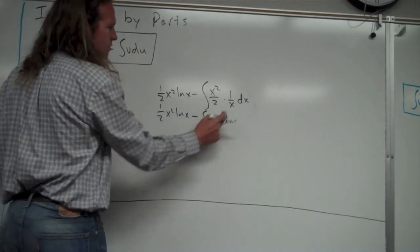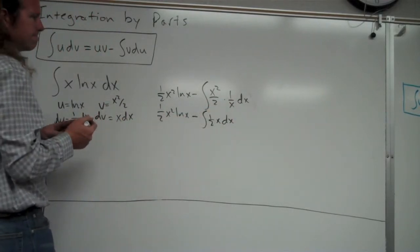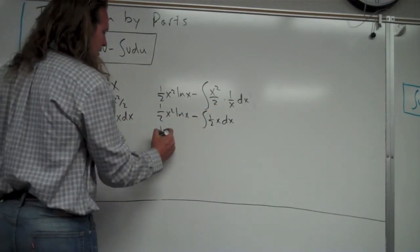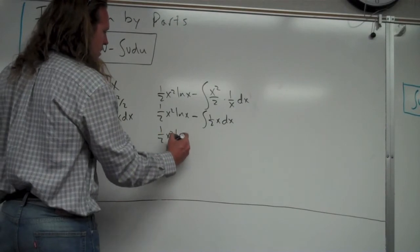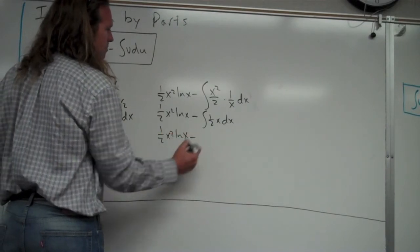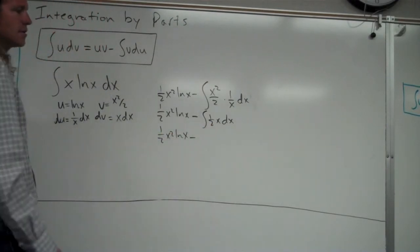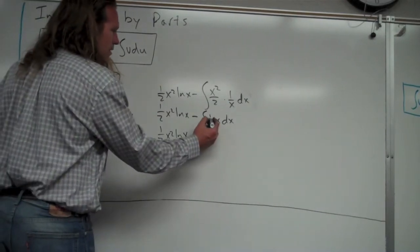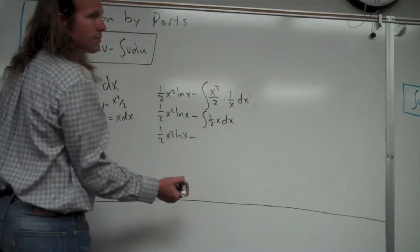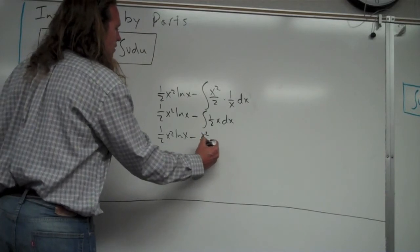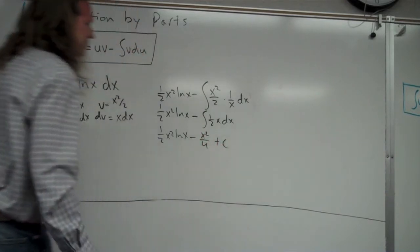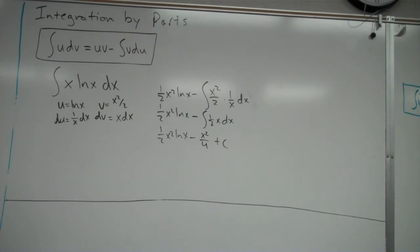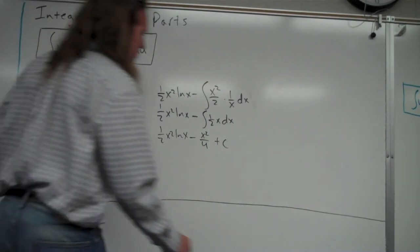So again, this just simplified to one-half x when it multiplies out. And then I can go ahead and do one-half x squared ln x. That just stays the same. Minus, you can now do this anti-derivative, which will just become one-half x squared over 2, which can simplify to x squared over 4 plus c. All right? So there is another wonderful integration by parts problem.